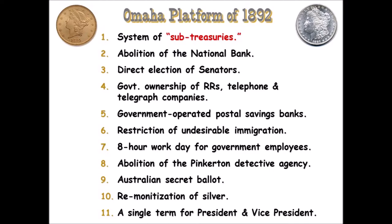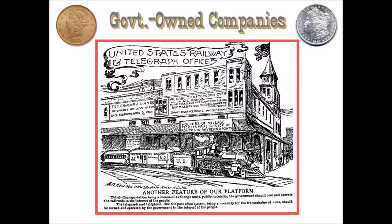The tenth plank was the re-monetization of silver — they were still blaming the de-monetization of silver for the economic collapse, which the speaker describes as pretty ridiculous economically. Looking at this platform, some of these ideas are reasonable and some are quite extreme. The eleventh plank called for a single term for president and vice president — no re-election. The speaker notes this was an era when America could really have easily gone socialist.